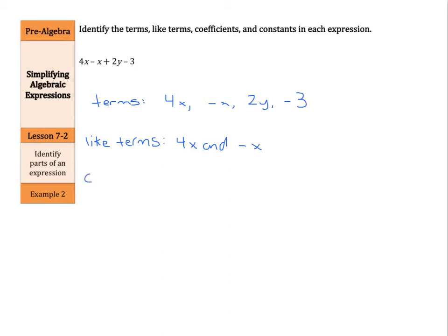My coefficients, the terms to the left of the variable, we have 4, and I actually missed one. This negative x, well, that's a negative 1x. So I can write that coefficient as negative 1. You do need to remember that. And our constant here, our constant is the term without the variable. That's our negative 3.